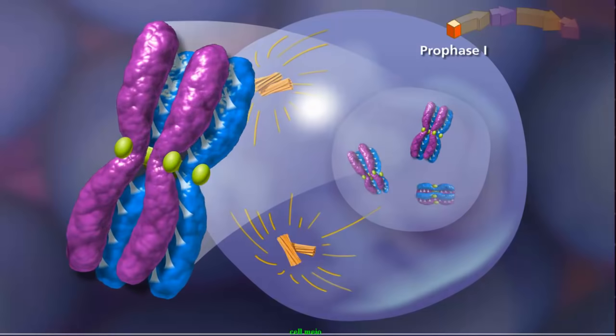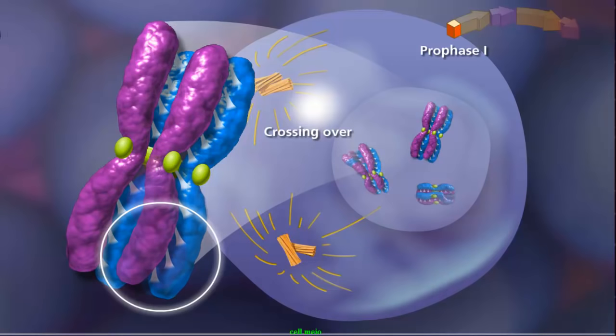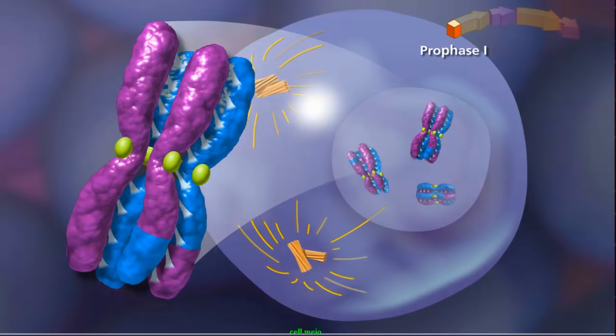Once this structure is formed, the second event, called crossing over, can occur. During crossing over, a physical exchange between chromosome segments of non-sister chromatids occurs, increasing genetic diversity.